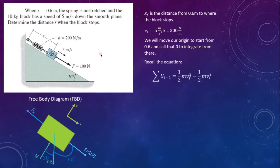For this problem, since it's a work and energy problem, we're going to recall the equation. The sum of the work from state 1 to 2 equals 1 half mv final squared minus 1 half mv initial squared. The first thing we're going to want to do is figure out what all the forces are and what is actually working on here.